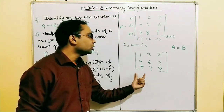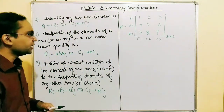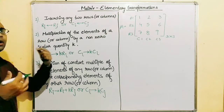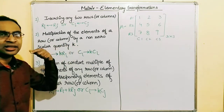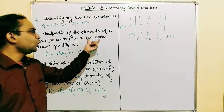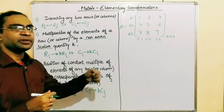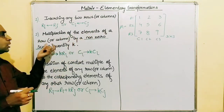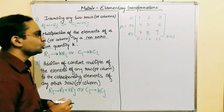The second elementary transformation is multiplication of the elements of a row or column by a non-zero scalar quantity k. It must be non-zero and it must be a scalar quantity — it cannot be a vector. It is represented as R_i → k·R_i for rows. Let's say we want to multiply row R2 by the number two.